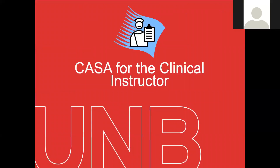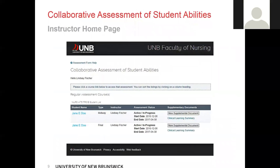Once you access the CASA application, this is what you will see — essentially your home page. You will see all the courses that you are associated with listed on this page. Located at the top of the page, you will notice a hyperlink to assessment form help; if at any time you require assistance, you can click on that link and it will open the most recent version of the CASA manual. Within each course, you will only see the students that you have been mapped with, and the student's name is a blue hyperlink that when clicked will open that student's individual CASA.